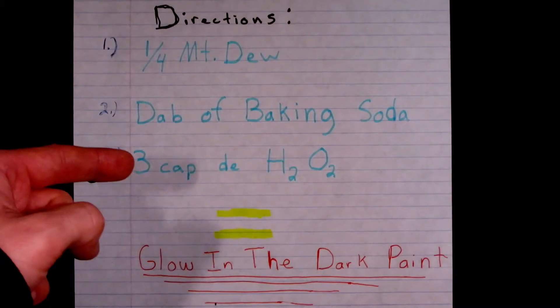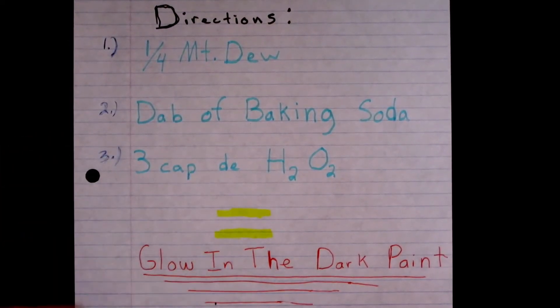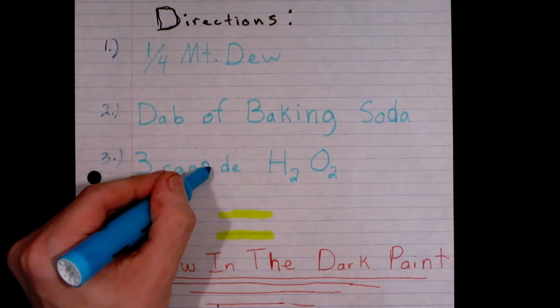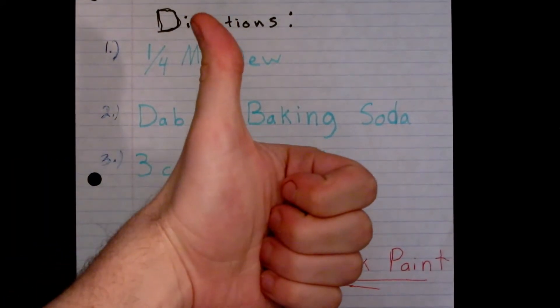The experiment calls for one-fourth Mountain Dew, a dab of baking soda, and three caps of hydrogen peroxide, and this will equate to glow-in-the-dark Mountain Dew.